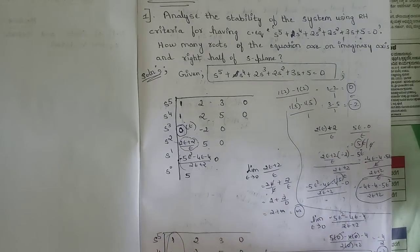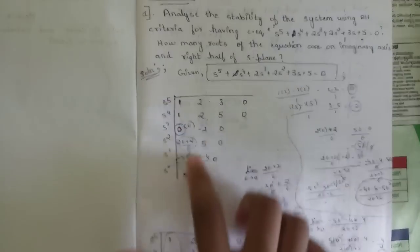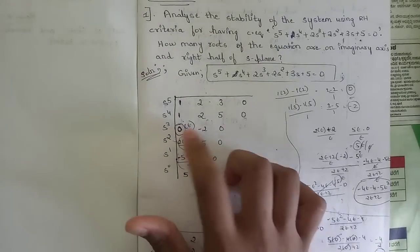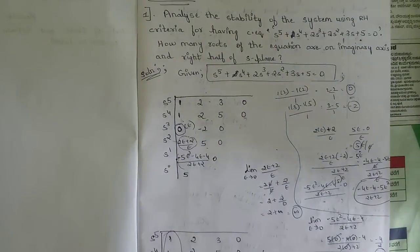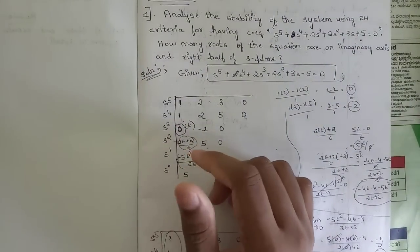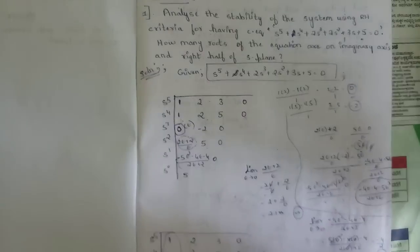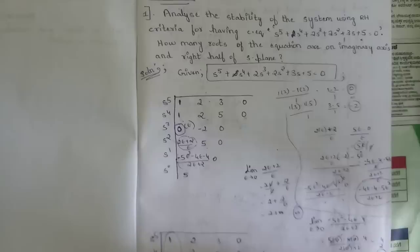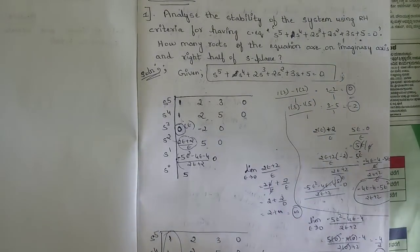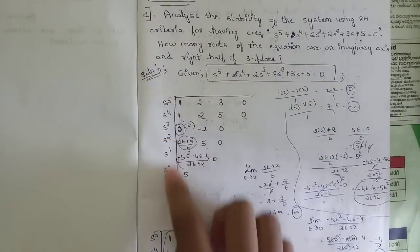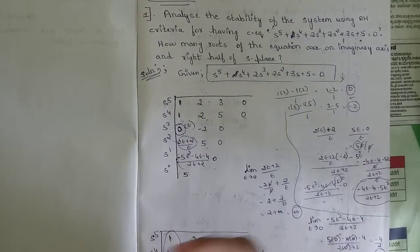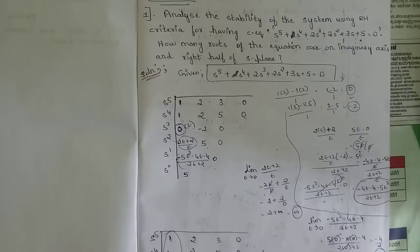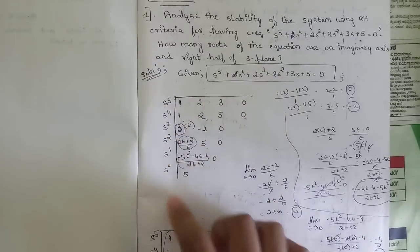We also discussed special cases: whenever we get a zero in the first column, that is one special case. We have already discussed how to find the roots using the Routh-Hurwitz criteria — whenever there is a sign change in the first column, count the number of sign changes, as that equals the number of roots. Whenever there is no sign change, the system is stable; whenever there is any sign change, the system is unstable.